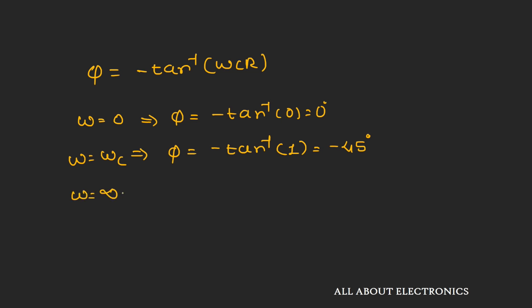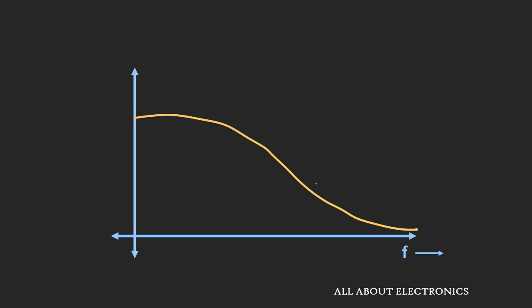At ω approaching infinity, the phase is −tan⁻¹(∞), which equals −90 degrees. If we plot the phase versus frequency curve: at zero frequency the phase is 0 degrees; at cutoff frequency the phase is −45 degrees, meaning the output signal lags the input by 45 degrees; and as we move beyond the cutoff frequency, the phase moves toward −90 degrees.